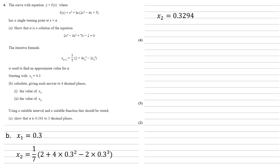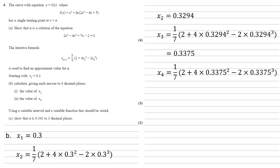To get to x₄, we first need x₃. Putting x₂ into the iterative formula: a seventh of (2 plus 4 times 0.3294 squared minus 2 times 0.3294 cubed) gives us x₃ equals 0.3375. Then to find x₄, we put that in again: a seventh of (2 plus 4 times 0.3375 squared minus 2 times 0.3375 cubed) gives us x₄ equals 0.3398.